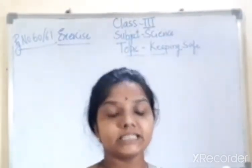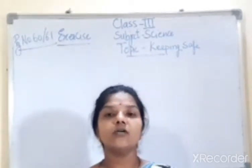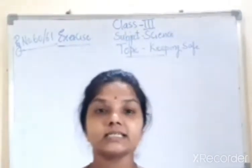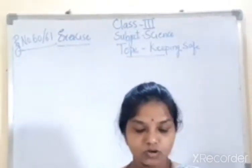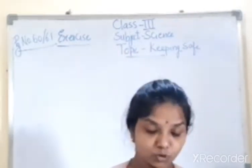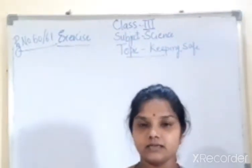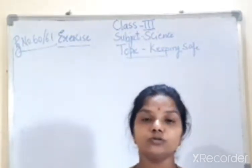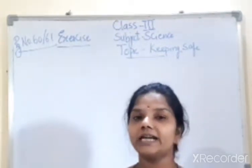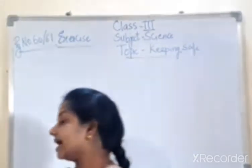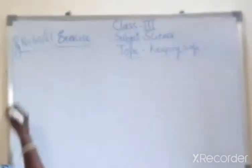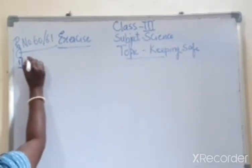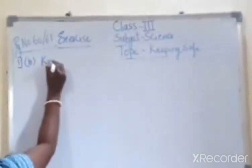The first question is: choose the correct option for each of the following. It is a multiple choice question. First one: which of the following can give you a cut? The options are handkerchief, knife, eraser, or notebook. The answer is knife — knife can give you a cut. So tick or write knife. The answer is B, that is knife.